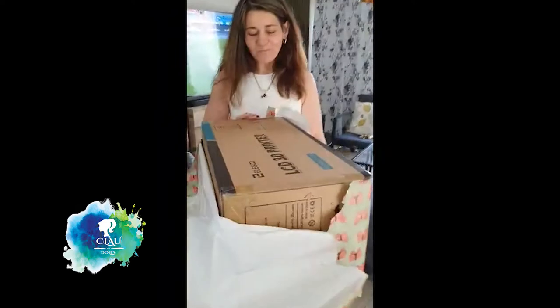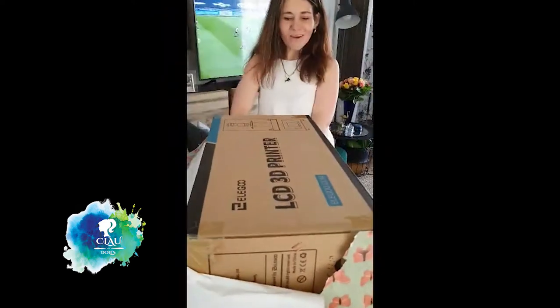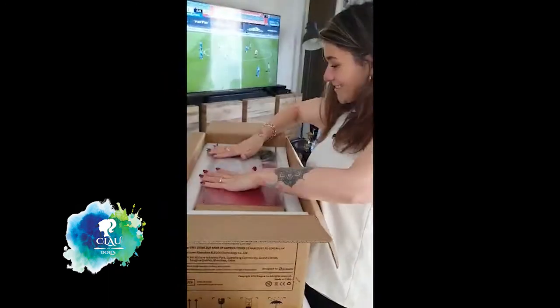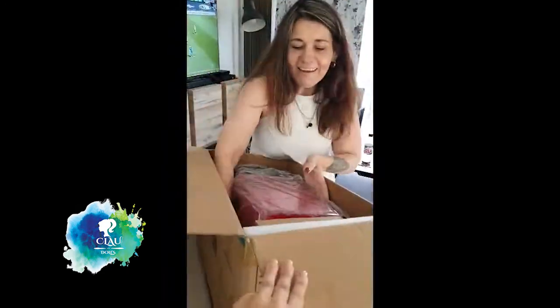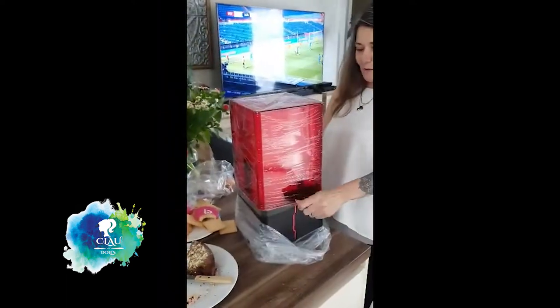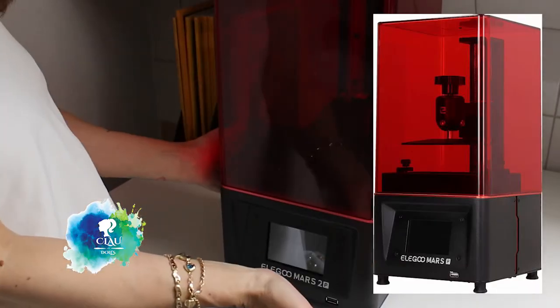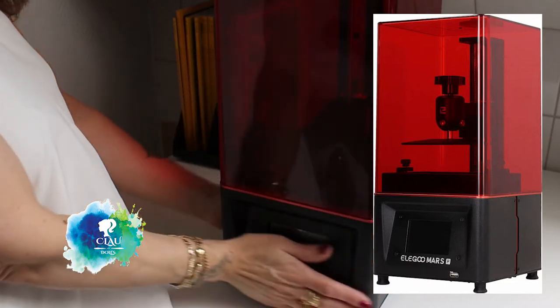I'm still learning of course. The Chitubox software comes with the USB stick - it's called the slicer that you can use to add supports, arrange the position and placement of the object on the plate. The Elegoo Mars 2 Pro comes with a lot of accessories that I'll show you in the photos.